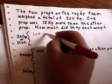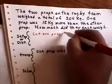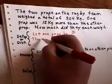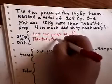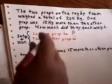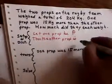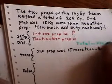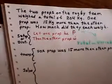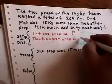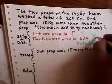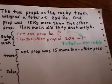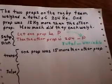We say: let one prop be P. Then the other prop is — and what you're always going to put in here is whatever the total is, minus the variable you've just used above. So the other prop is 204 minus P. They all start off that way. You let one of them be a letter and the other is total minus that letter.